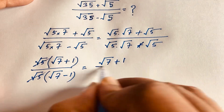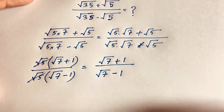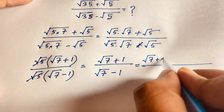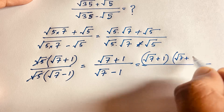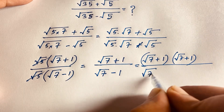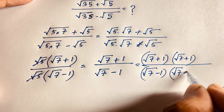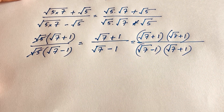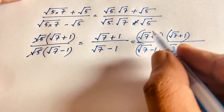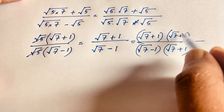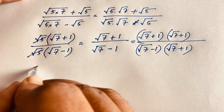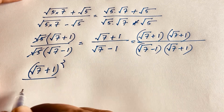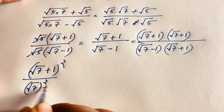Now at this point, after canceling square root of 5, we have square root of 7 plus 1 over square root of 7 minus 1. I multiply numerator and denominator by square root of 7 plus 1. So the numerator becomes square root of 7 plus 1, whole to the power 2, and the denominator becomes square root of 7 whole squared minus 1 squared.